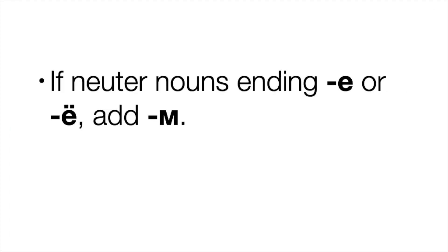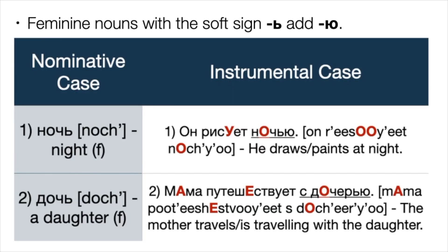If neuter nouns end in -е or -ё, just add the letter -м. Feminine nouns with a soft sign: add -ью. Number one: ночь — night, feminine noun. Example: Он рисует ночью — He draws at night. Number two: дочь — a daughter, feminine noun. Example: Мама путешествует с дочерью — The mother travels with the daughter.